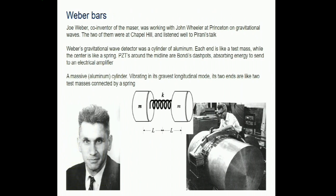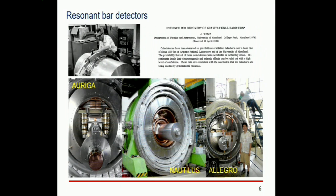Joe Weber was at that conference, heard Pirani's talk, and decided to build a detector. He built the first so-called bar detectors - big aluminum bars - where a gravitational wave comes in and displaces masses inside, and piezoelectric sensors placed at the center pick up the energy. Many of these detectors were built, including cryogenic detectors and the Explorer detector at CERN.